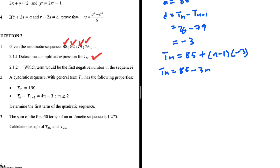Expanding, tn = 85 + (-3n) + 3 = -3n + 88. Verifying: when n=1, we get 85; when n=2, we get 82; and when n=4, we get 76. So the simplified expression for tn is -3n + 88.